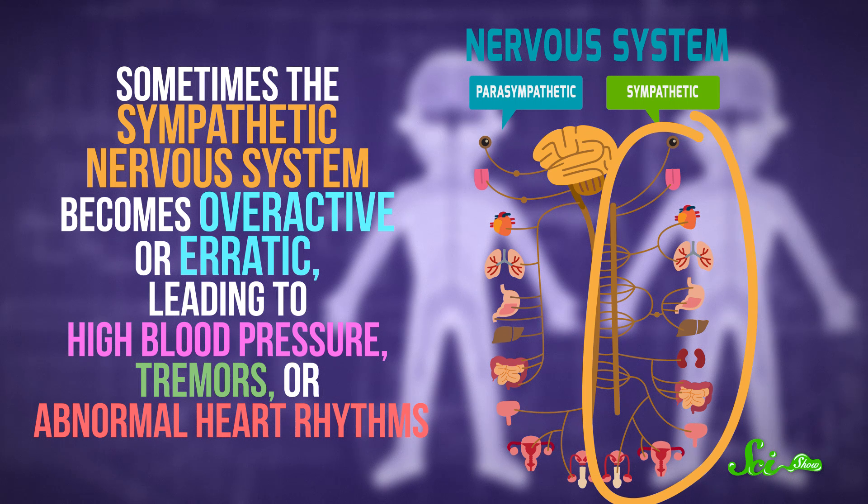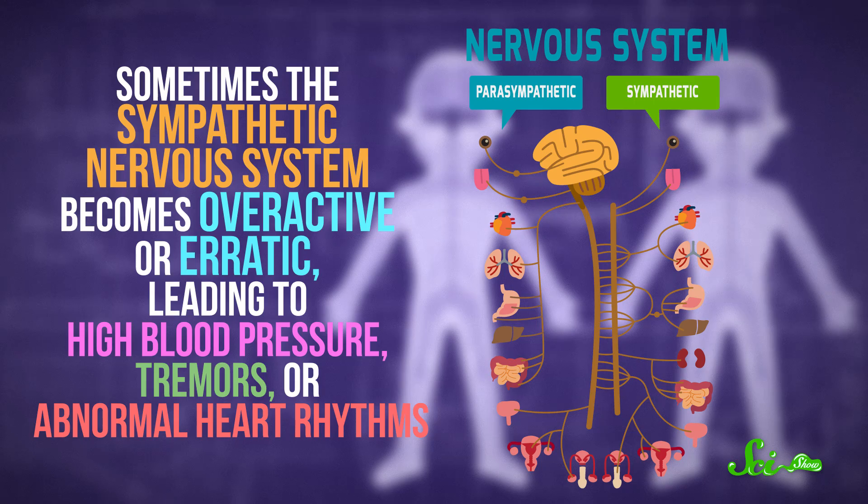But sometimes, the sympathetic nervous system becomes overactive or erratic, leading to high blood pressure, tremors, or abnormal heart rhythms.